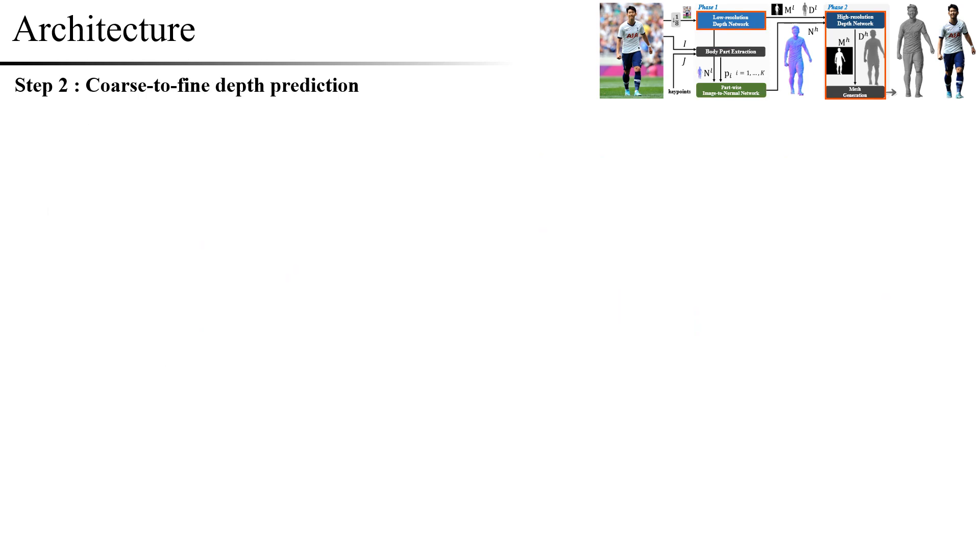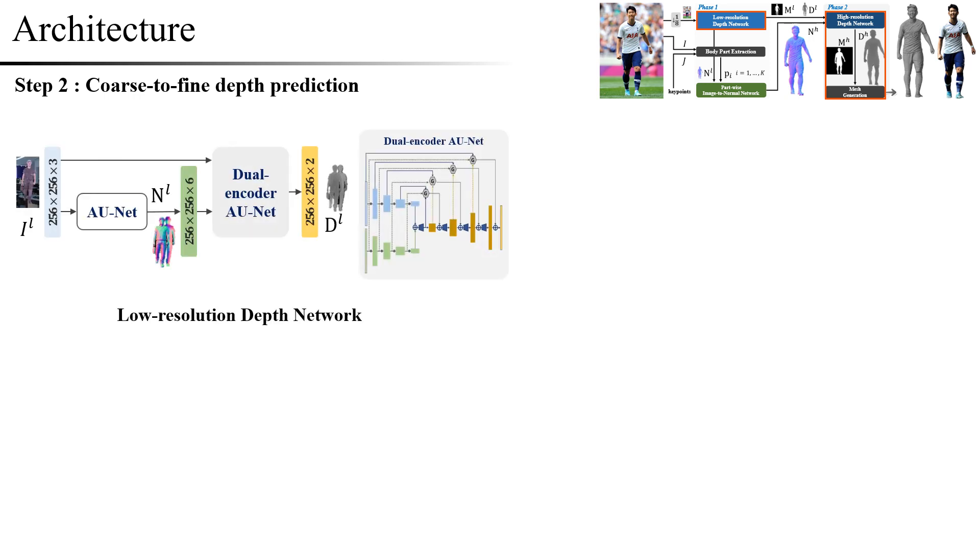Next, we use a coarse-to-fine manner to reconstruct high-resolution depth map. In order to obtain the global shape of the human body with minimal computation, we predict a low-resolution depth map by reducing the image resolution.